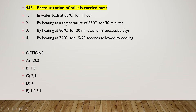The next question: pasteurization of milk is carried out by — water bath at 60°C for one hour, heating at 63°C for 30 minutes, heating at 80°C for 20 minutes for three successive days, or heating at 72°C for 15 to 20 seconds followed by cooling. The right answer is option C — two and four: heating at 63°C for 30 minutes and heating at 72°C for 15 to 20 seconds followed by cooling.